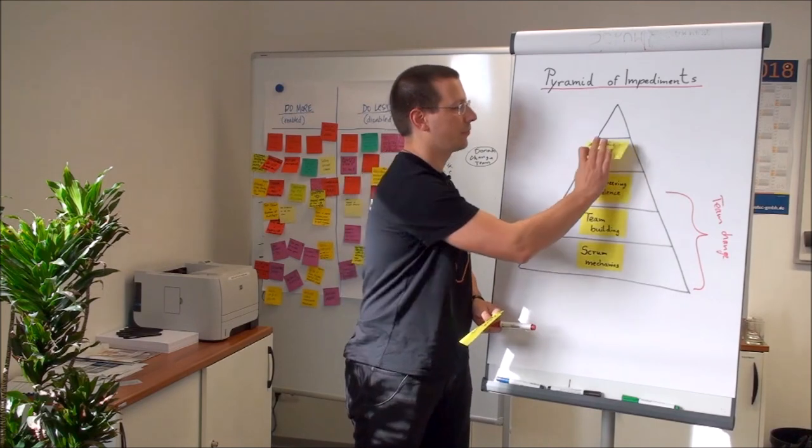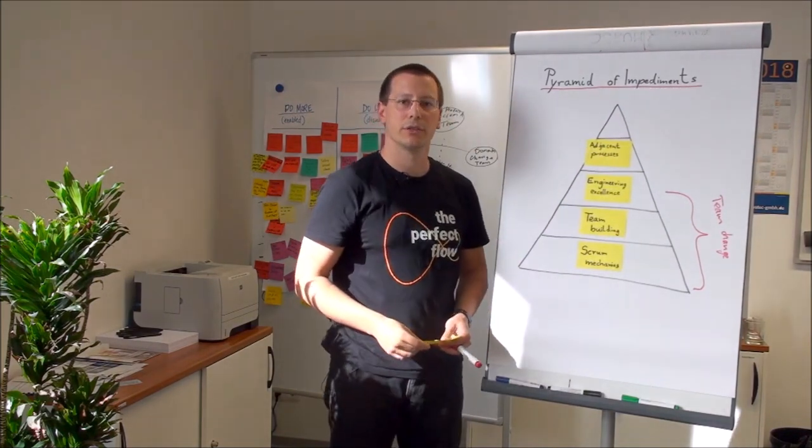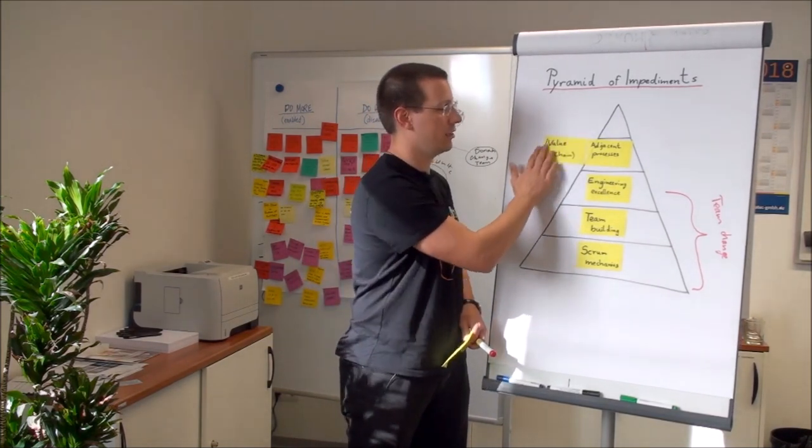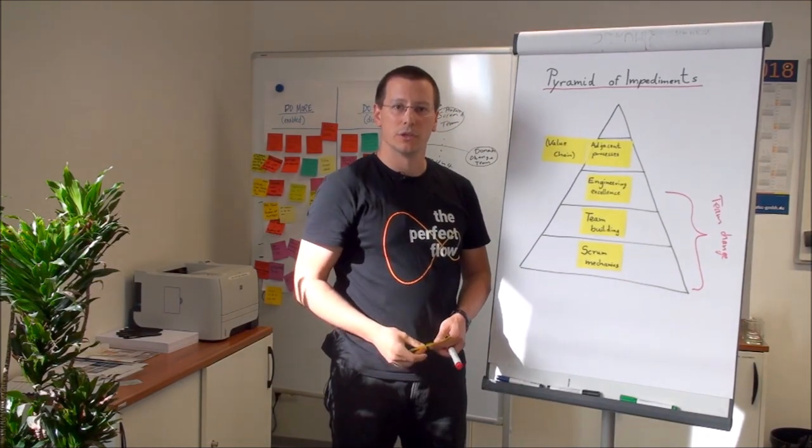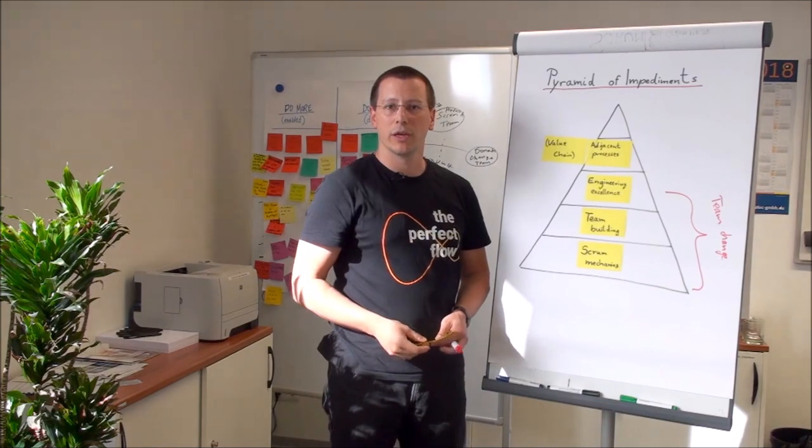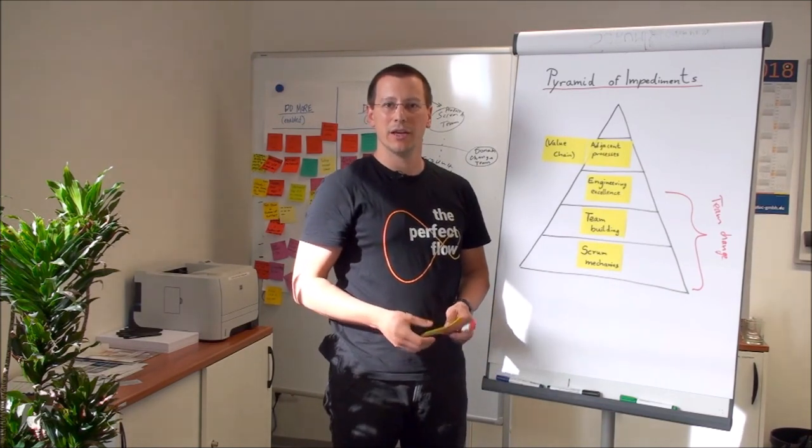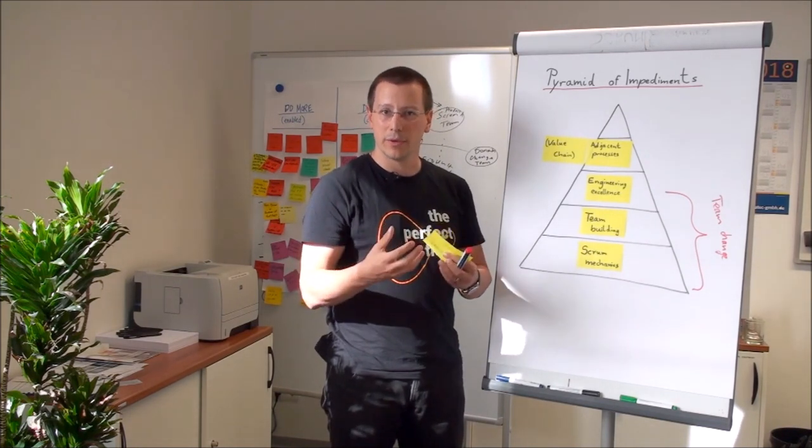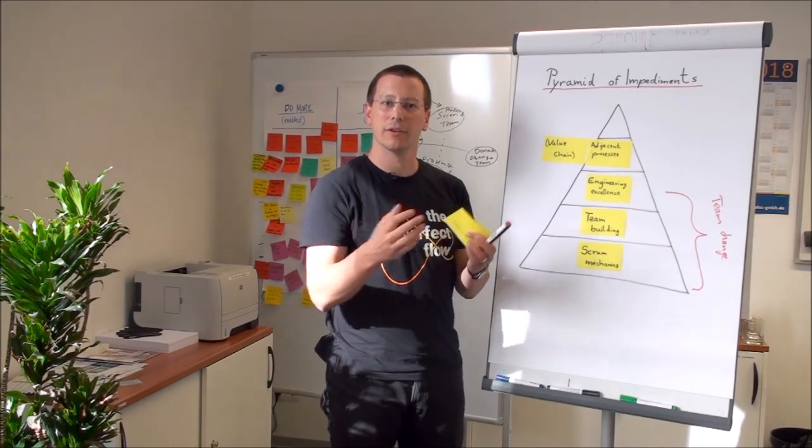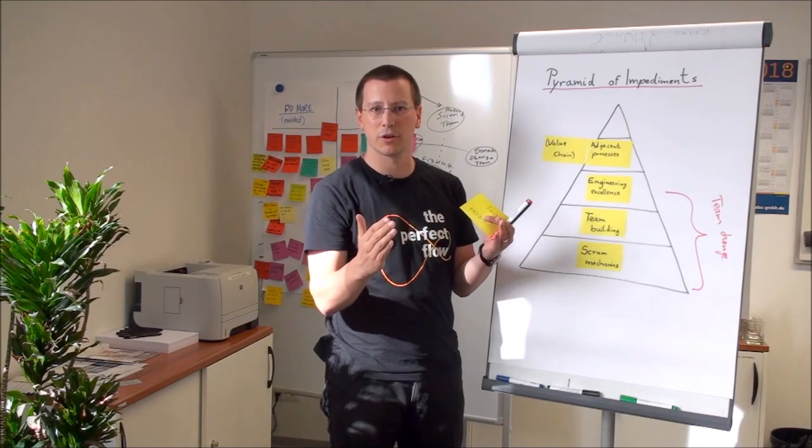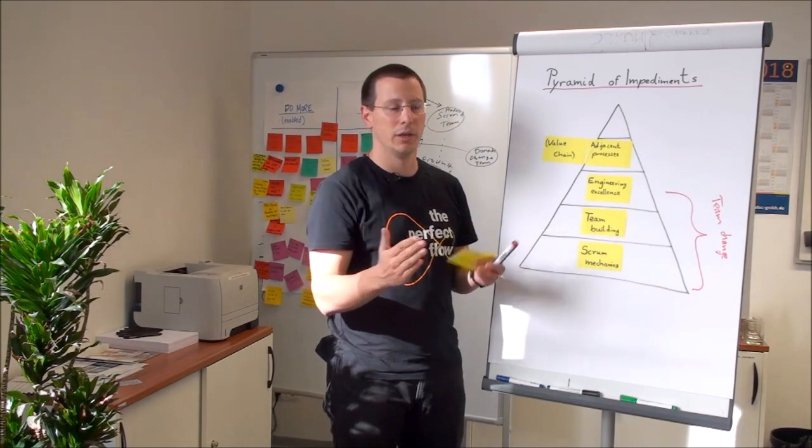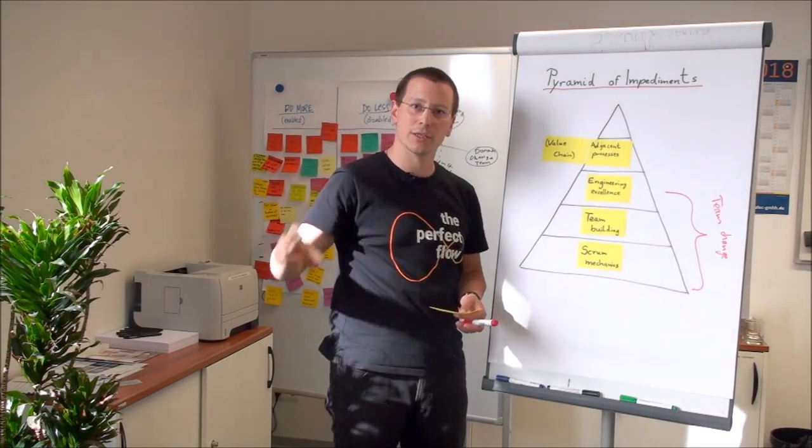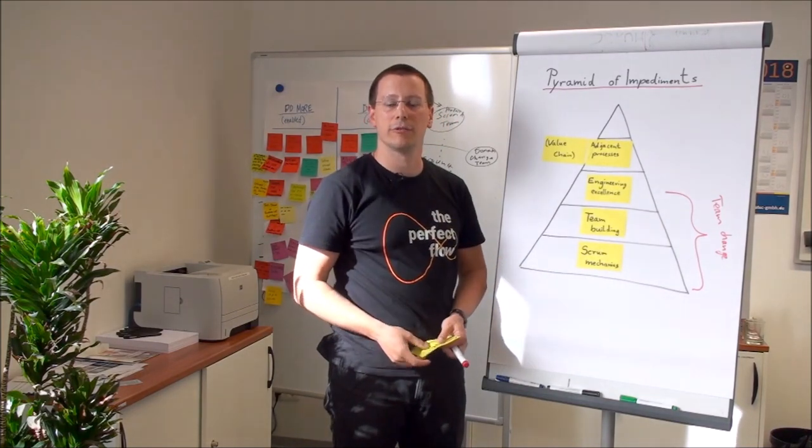Those fields are usually associated with adjacent processes. This means processes along the value chain of software delivery. Imagine a team working in a water scrum environment. Once they have the requirements, they can work very agile and deliver them to the end. But from the customer request to the scrum team, it might take a long time. So here you will try to optimize that, so that from customer idea to customer delivery, you have everything optimized for agile delivery.